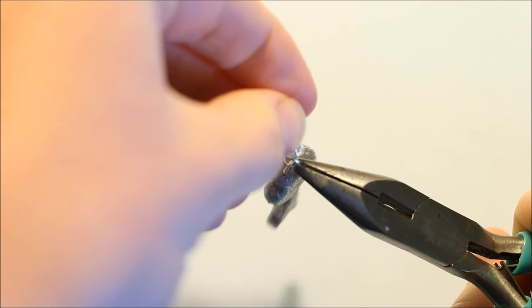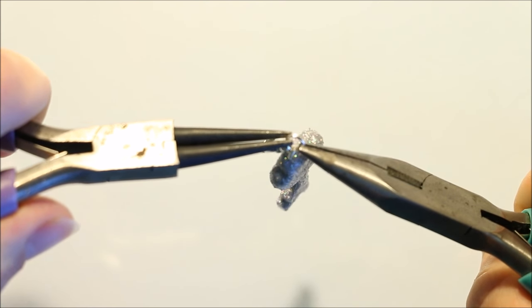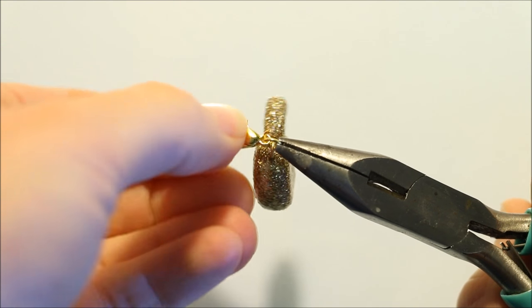Now you have two adorable best friend charms that you can then use and share with your friends. Simply attach on a small lobster clasp and close a jump ring.